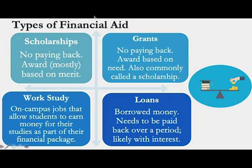Grants basically refer to everything a school gives you based on your need — based on how much you can or can't afford. It's also commonly called a scholarship, but if we're being strict about the difference: scholarships are awarded on merit and grants are awarded on need. So if you can only afford ten thousand dollars and the entire school costs sixty thousand dollars, the school will give you the remaining fifty thousand dollars — that fifty thousand is a grant.